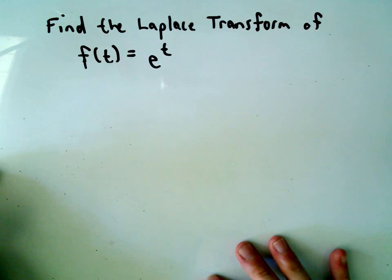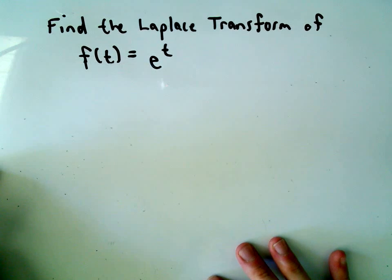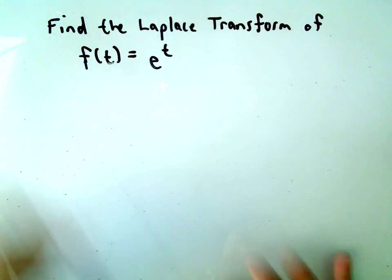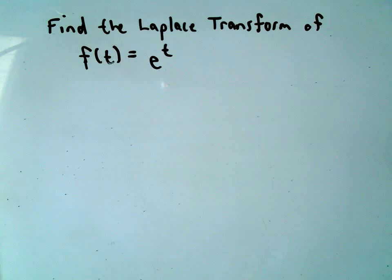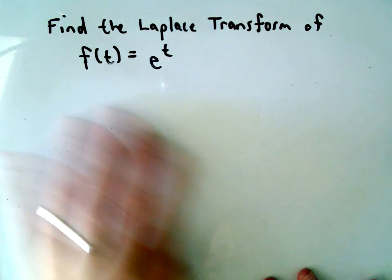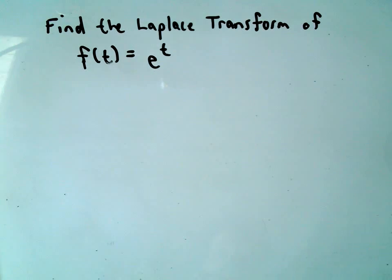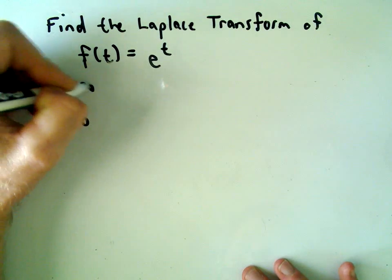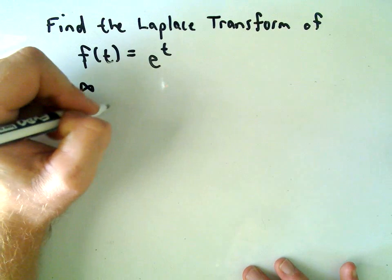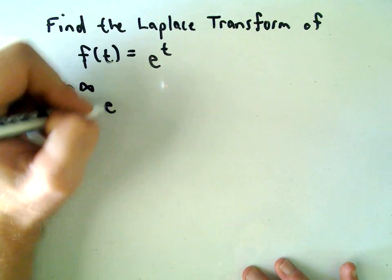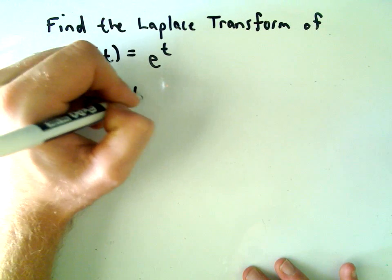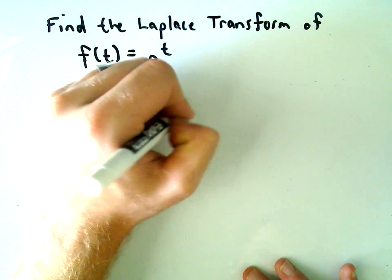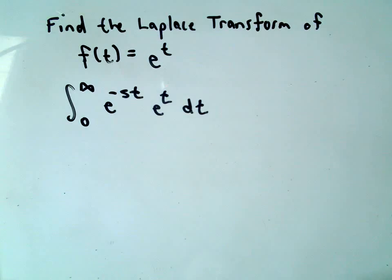So here we have to find the Laplace transform of e to the t — a basic fundamental example. To find the Laplace transform, we integrate from 0 to infinity, take our function, multiply it by e to the negative st, and integrate with respect to t.